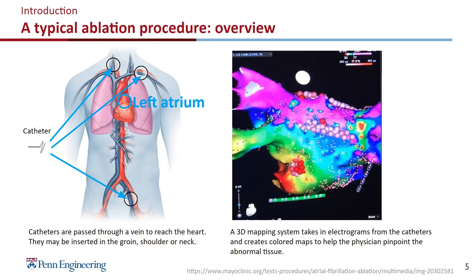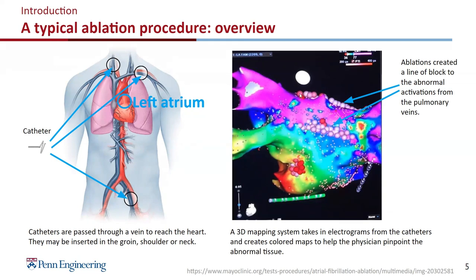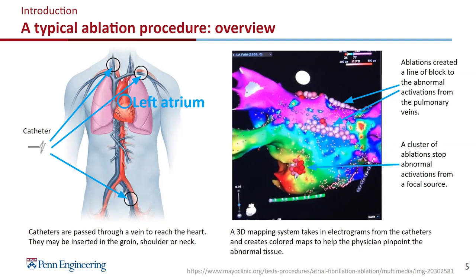Here I show you an example of catheter ablation. At the top, we see two lines of ablations — those are to block the abnormal activations coming from the pulmonary veins, so that the abnormal activations will stop and confine in that region and not go into the atrium. This is called pulmonary vein isolation. But sometimes this will not be enough to stop the arrhythmia because there are additional sources. As shown at the bottom, we find a focal source — a point source that generates abnormal activations — and the physicians apply a cluster of ablations to the focal source to stop those abnormal activations.